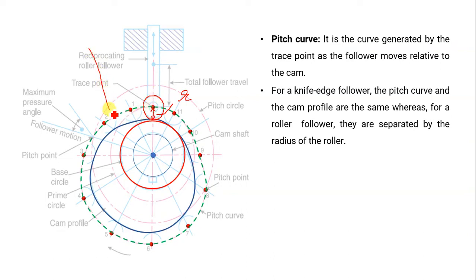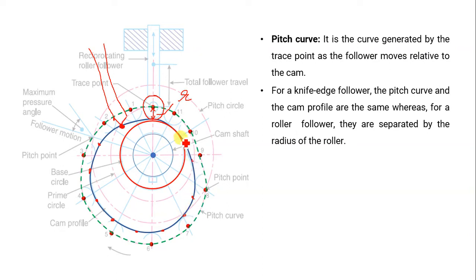In the case of a knife-edge follower, if our follower is the knife-edge type, then our trace point will be the knife edge. If I trace the points around the cam profile, I will get points like this. Now if you connect these points, the curve generated is the same as the cam profile in the case of a knife-edge follower.